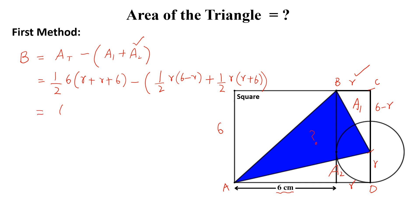This will be equal to 6r plus 18 minus 6r minus r square divided by 2 plus 6r plus r square divided by 2. Simplify more.